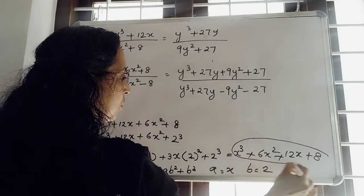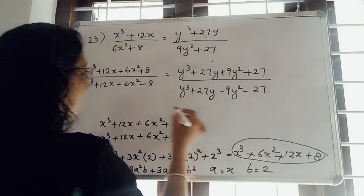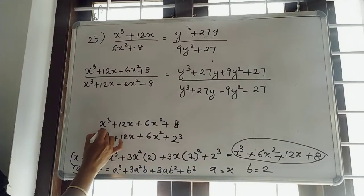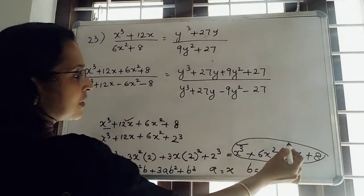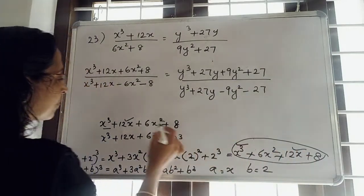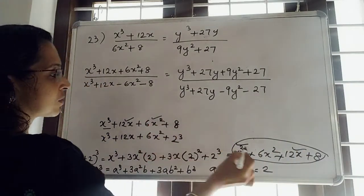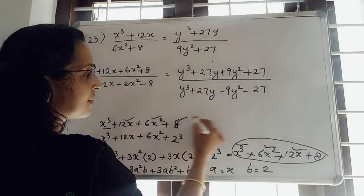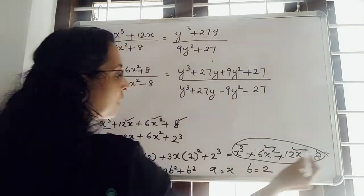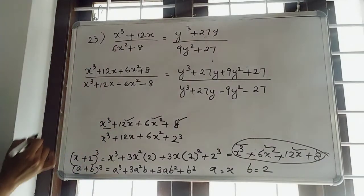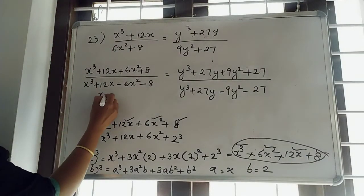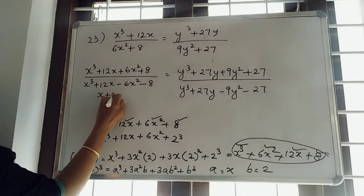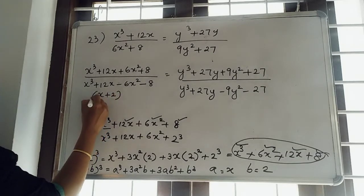The same thing is in the numerator: x³ + 12x + 6x² + 8. Comparing, we can replace this numerator as (x + 2)³.